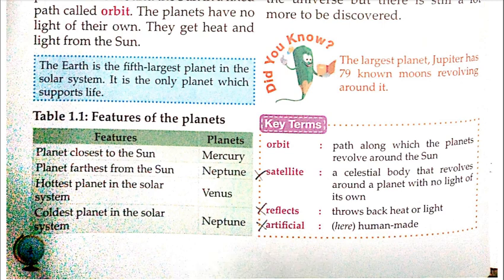Key terms: Orbit — a path along which a planet revolves around the sun. Satellite — a celestial body that revolves around a planet with no light of its own. Reflects — to throw back heat or light, like the moon reflects sunlight. Artificial — human-made, as in artificial satellites created by scientists.